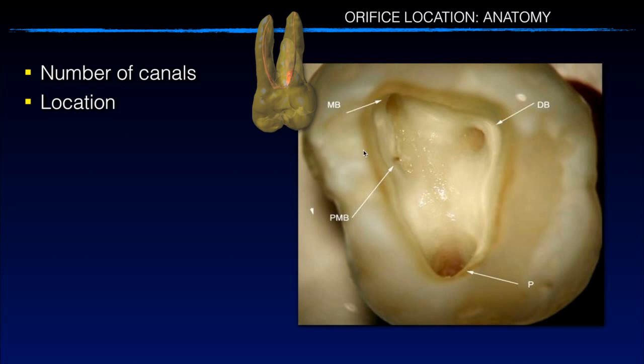You need to remember how many canals you're supposed to find. The latest studies using sophisticated micro-CT imaging show that there is a fourth canal — at least one more canal in that mesial buccal root — about 96% of the time. So you can just say: it's there. You need to find it. You don't always find it, but it's there.